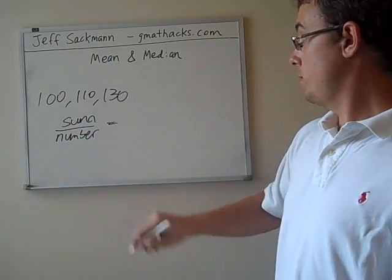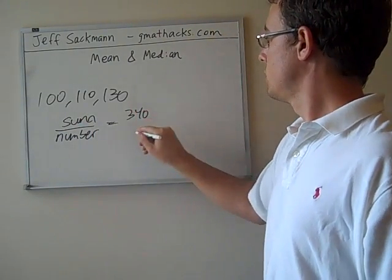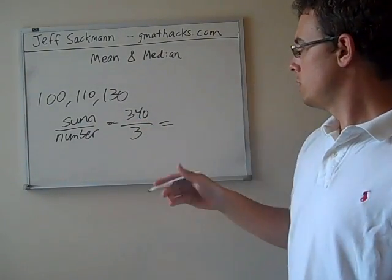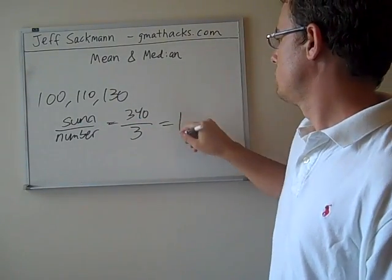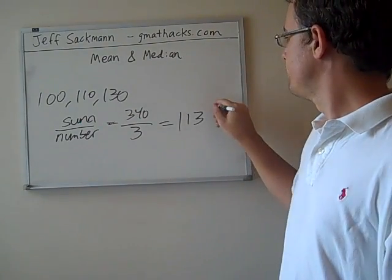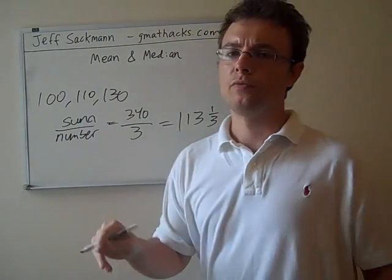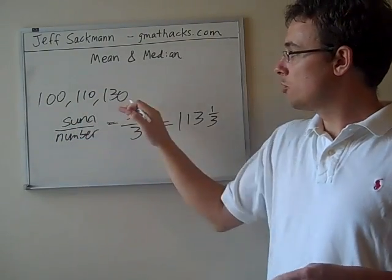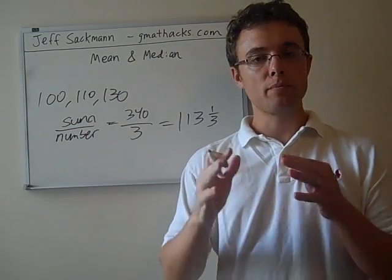So in this case, when we add them up, we get 340. There are three scores, so we get something like 113 and a third. So the exact number isn't important, but notice that we're taking three numbers and we're coming up with a middle term, one that represents the entire set of three numbers.